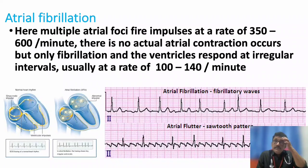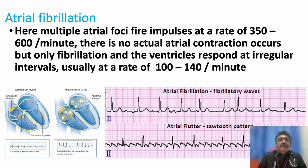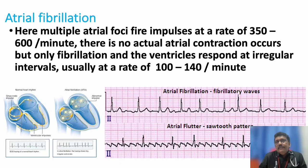Around 100 to 160 impulses per minute go to the ventricle in an irregularly irregular fashion. That is why you do not see a regular P wave — only a wavy baseline is seen — and the RR interval is totally irregular. Whenever a QRS complex forms on the ECG, you get a pulse, which is why the pulse is also irregularly irregular. Atrial flutter is similar but the rate is lower and more regular, with a sawtooth appearance of P waves. We are focusing on atrial fibrillation here.